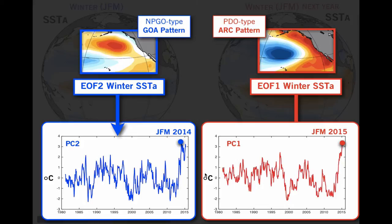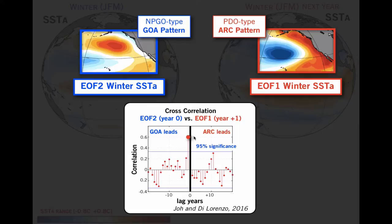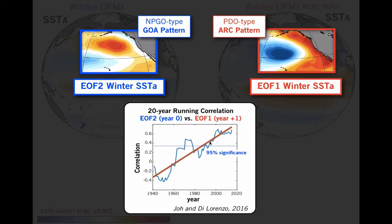If we do a cross-correlation between the winter principal components of EOF1 and EOF2, we find that at lag zero, they're independent, as expected from EOFs. But as you move to a one-year lag, you see a significant correlation of 0.6 when the Gulf of Alaska pattern leads the PDO-type or arc pattern. We can also split this in time to see how stationary this coupling is, by running the lead correlation over a 20-year window. This is very revealing because it shows that early in the 1940s and 1960s, the coupling between these two modes wasn't very strong, but then it increased significantly, showing a marked trend over time.